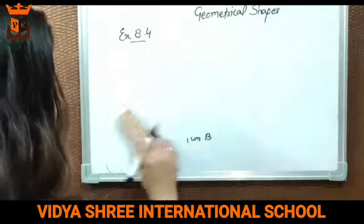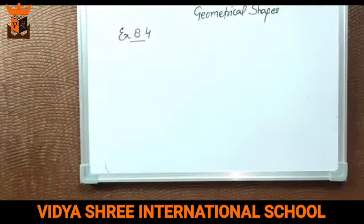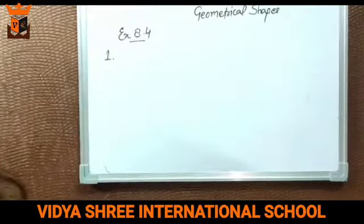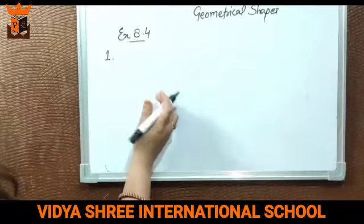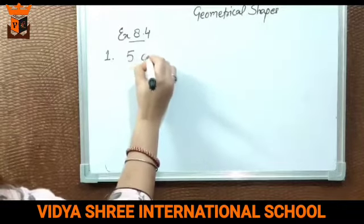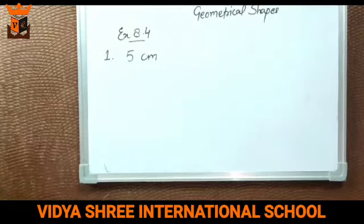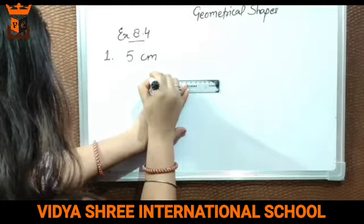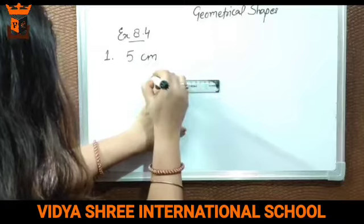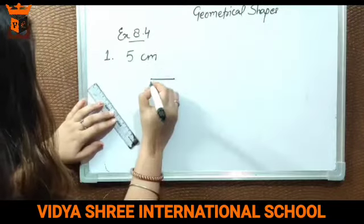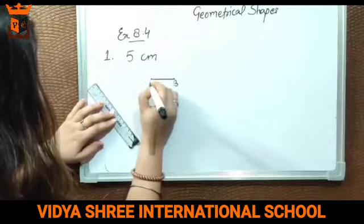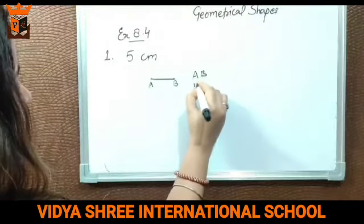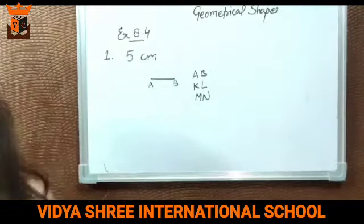Now we will do exercise 8.4. In exercise 8.4, the first question asks us to draw line segments of the given lengths with the help of a ruler. First is five centimetres. We place the scale, take the first point at zero, and the second point at five. Then we join them. This is the required line segment. You can give it any name — A, B, P, Q, R, S, M, N, K, L — any name, but always in capital letters only. You should remember this.